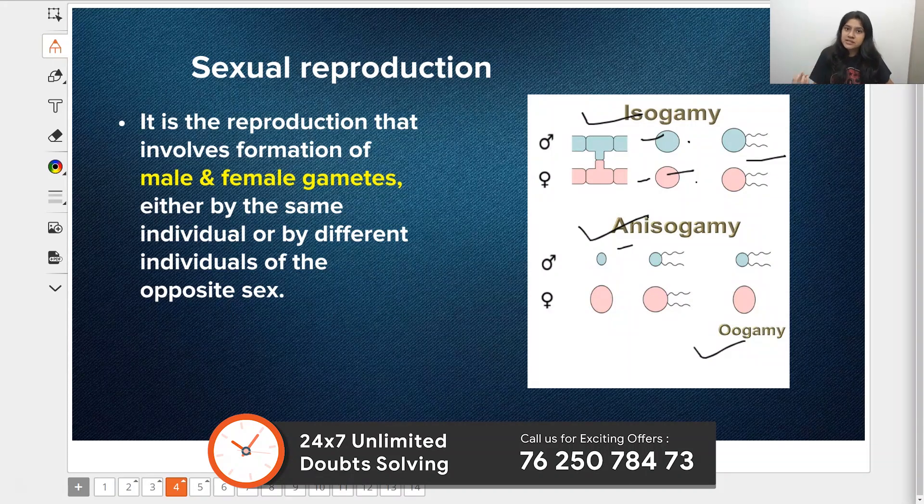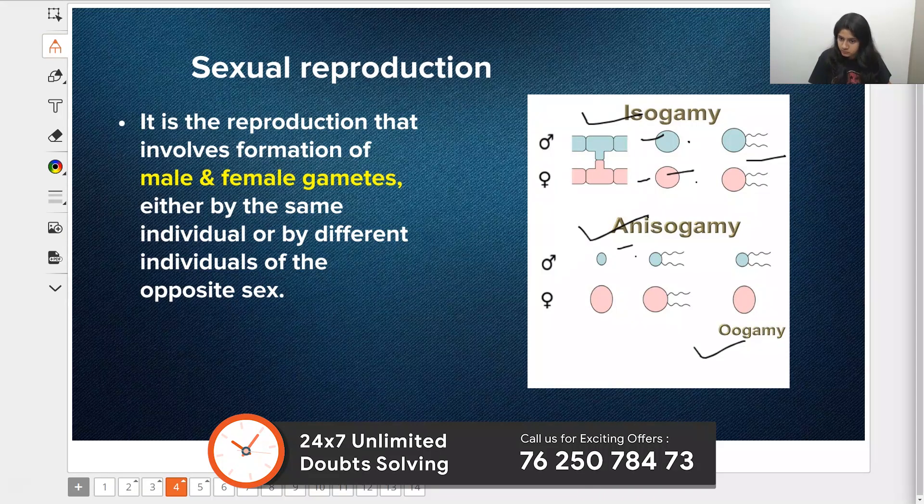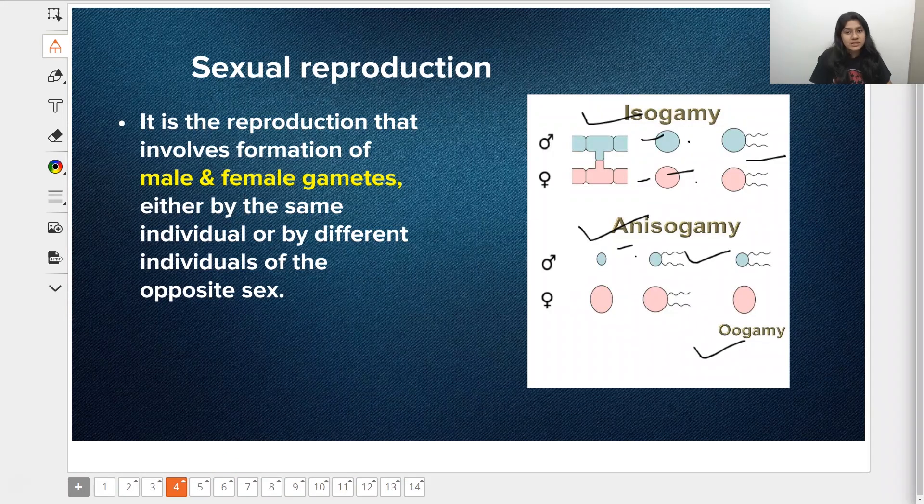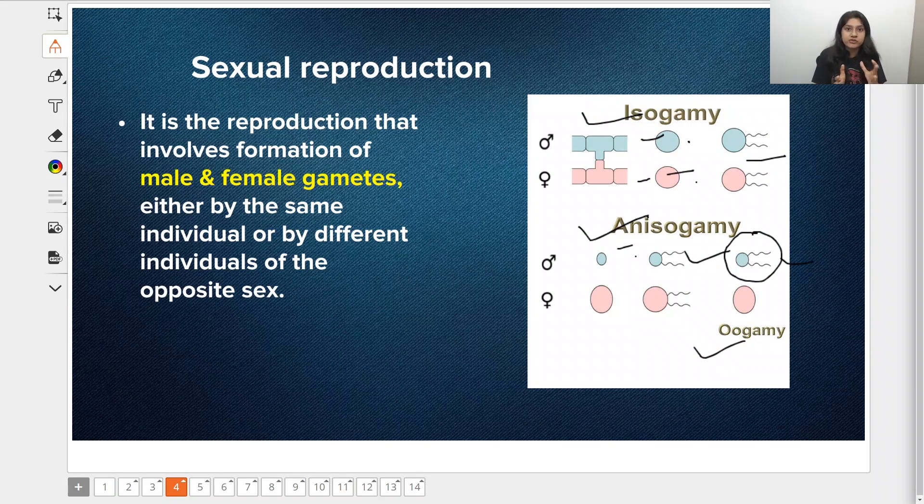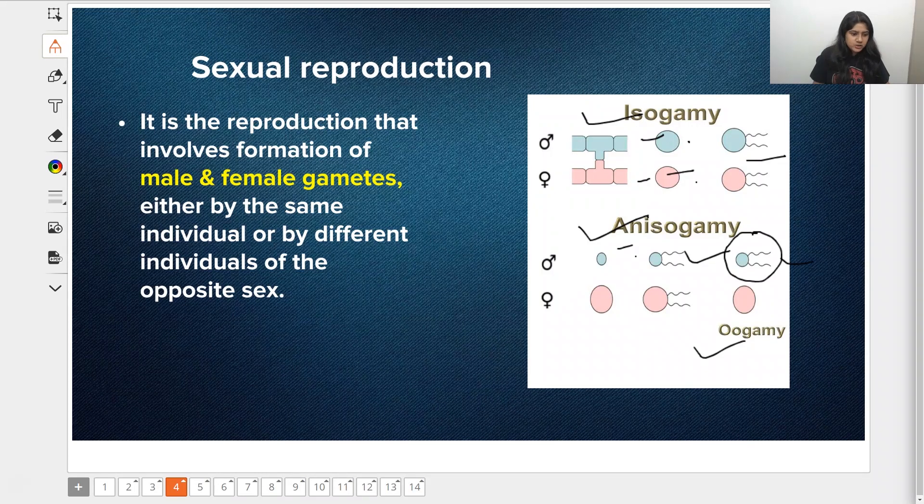In oogamy, the male gamete is smaller in size and is motile, while the female gamete is larger in size and is non-motile. So here is a clear-cut difference between the male and female gametes that helps in the process of sexual reproduction.